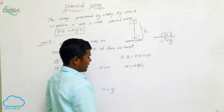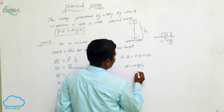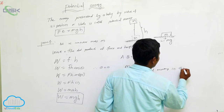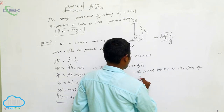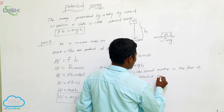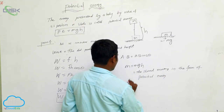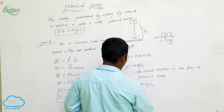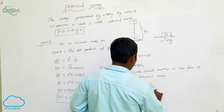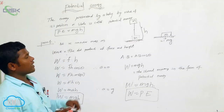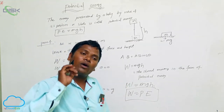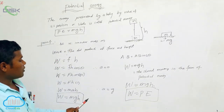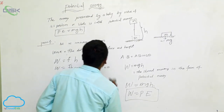How much work you have done here is stored in the form of energy — stored energy in the form of potential energy. So W equals MGH. Then W equals PE. This is the potential energy. In the exam, you may get a question like: derive the equation for potential energy. We can derive it this way. The formula is PE equals MGH.